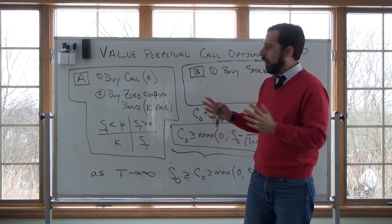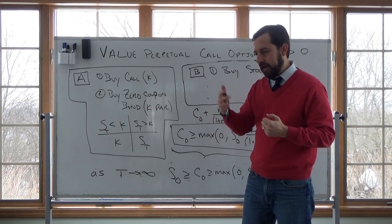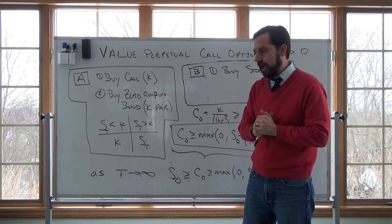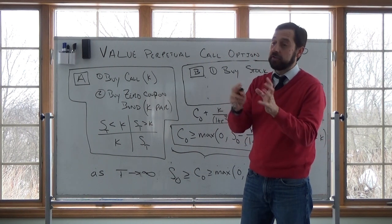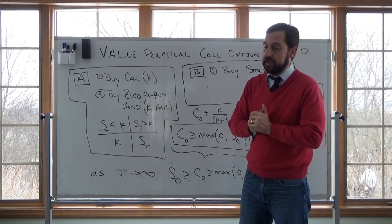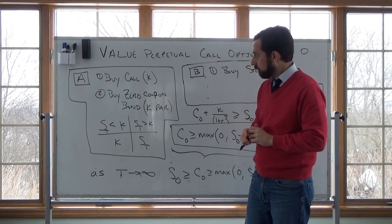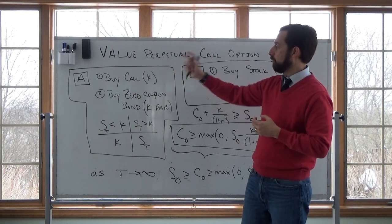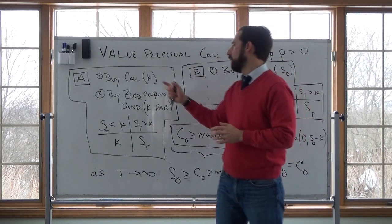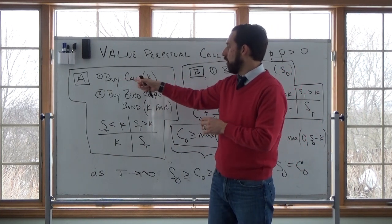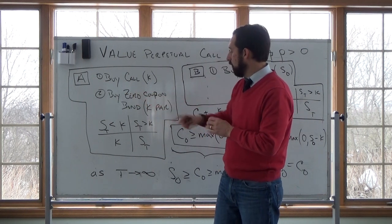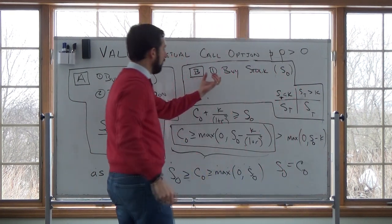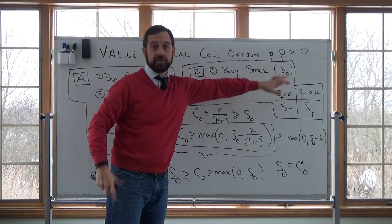To do this, we can start with the proof — this is in Merton's Theory of Rational Option Pricing in the book Continuous Time Finance — on why we never exercise an American call option on a non-dividend paying stock prior to expiration. To show this, we set up two portfolios: Portfolio A and Portfolio B. Portfolio A is we buy a call option with strike price K, and then we buy a zero-coupon bond with a face or par value equal to K. Portfolio B is simply we buy the stock today for S(0), where zero is today.